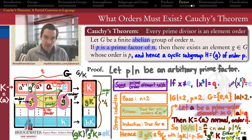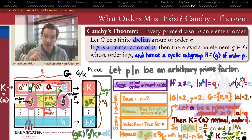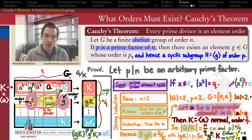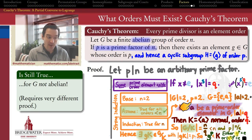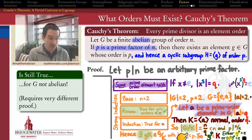This concludes the proof. Every finite abelian group, given a prime divisor P of its order, is guaranteed to have an element whose order equals P. For example, any finite abelian group of order 2555 will definitely have an element of order 5, since 5 is a prime divisor of 2555. The abelian hypothesis was crucial: without it, we could not guarantee the cyclic subgroup generated by A is normal, and we could not form the factor group needed for the induction.